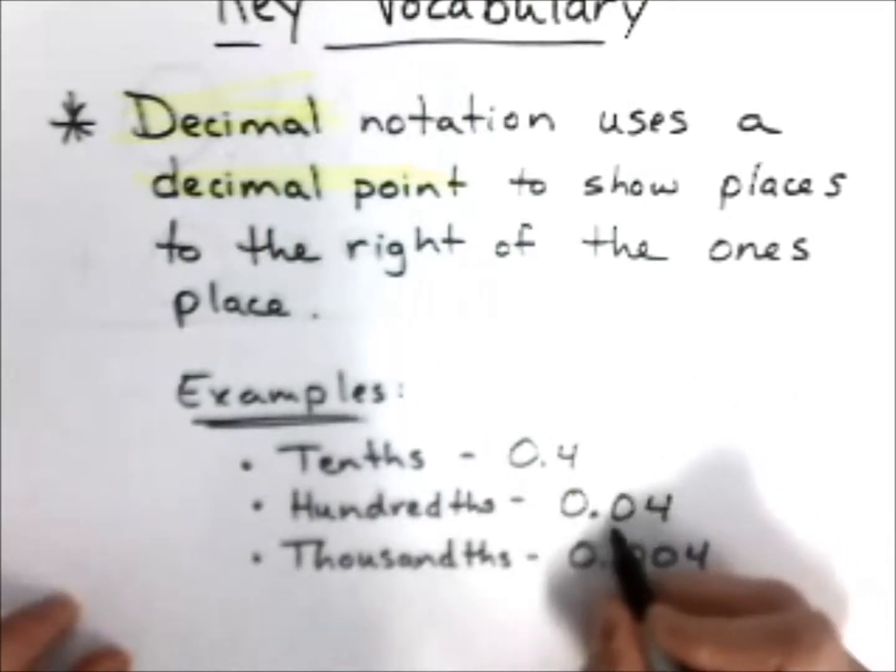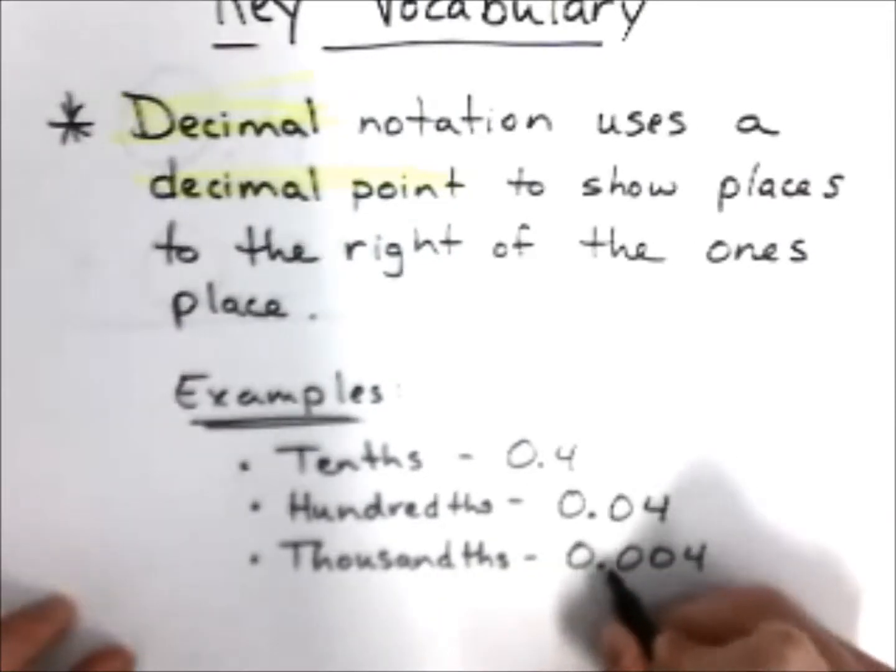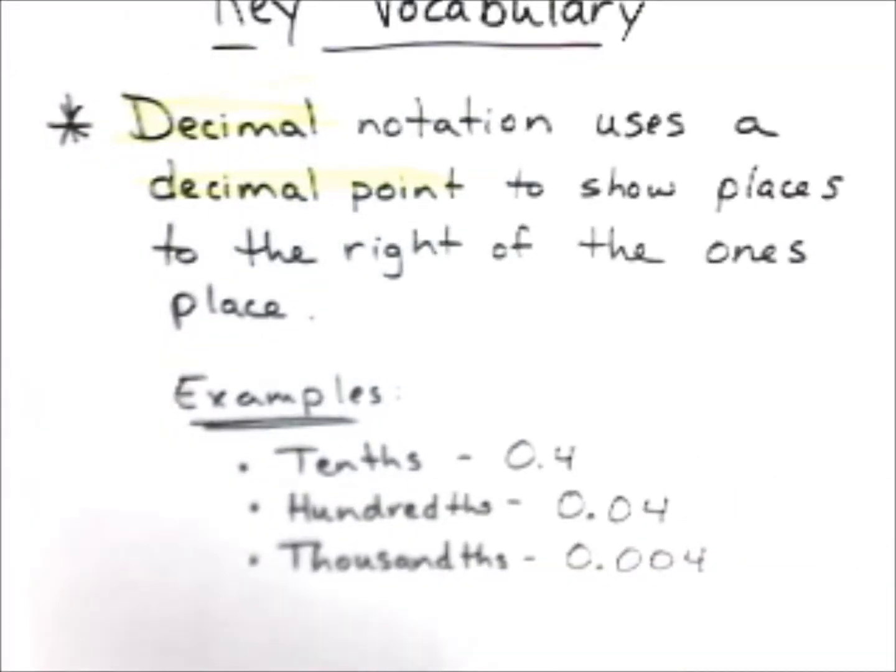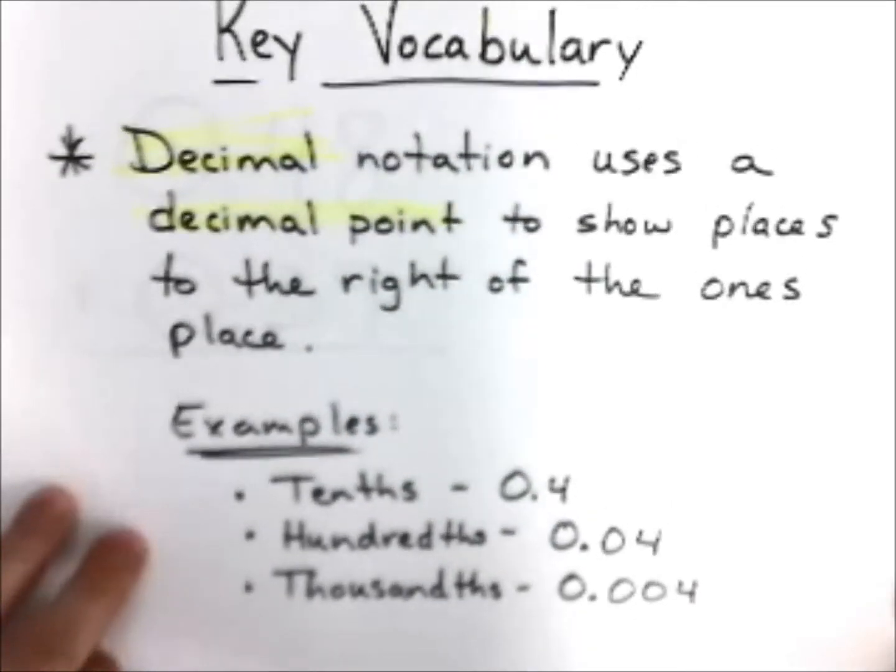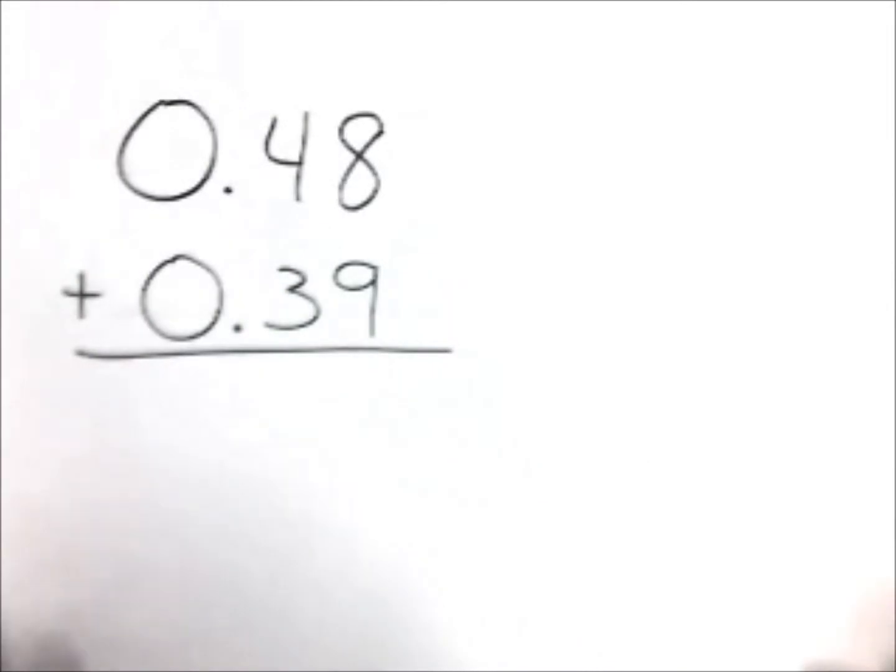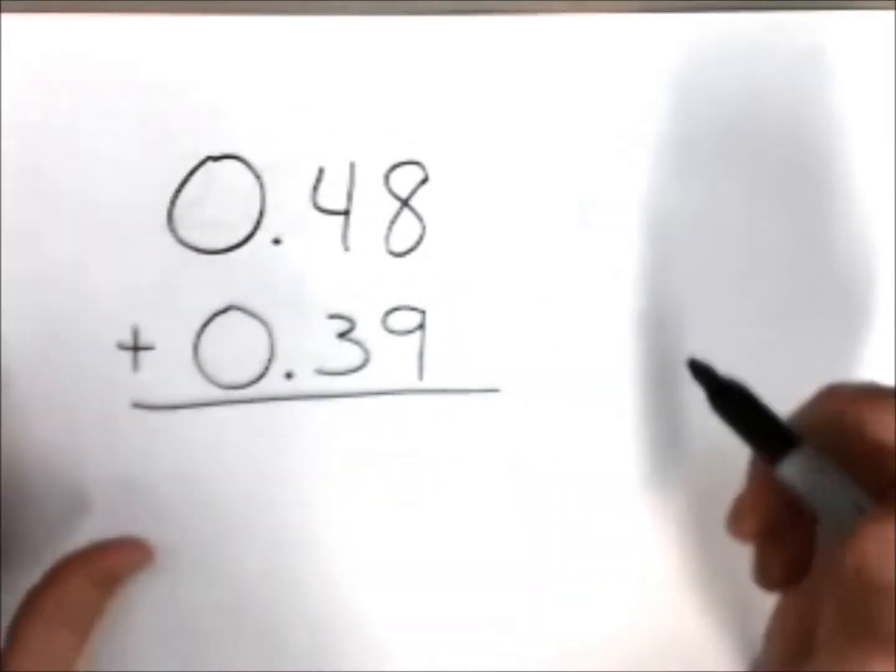...and your thousandths, which is three numbers to the right of the decimal point. And I'm pretty sure our good friend Mrs. Pogromich went over this with you in a video earlier on. So get that out of here, we're moving on to our first example.